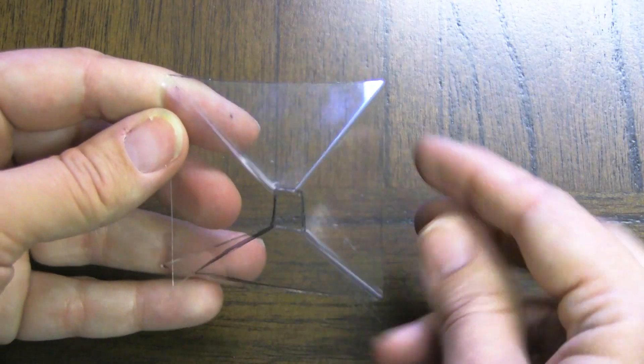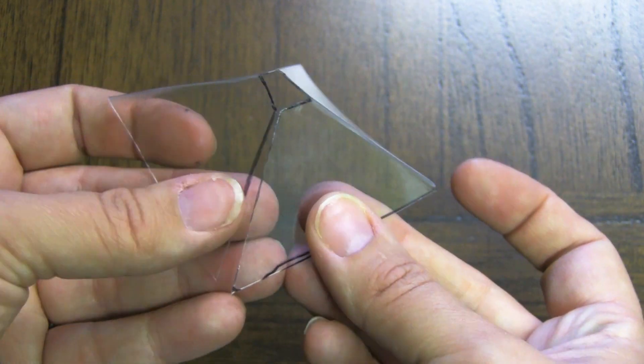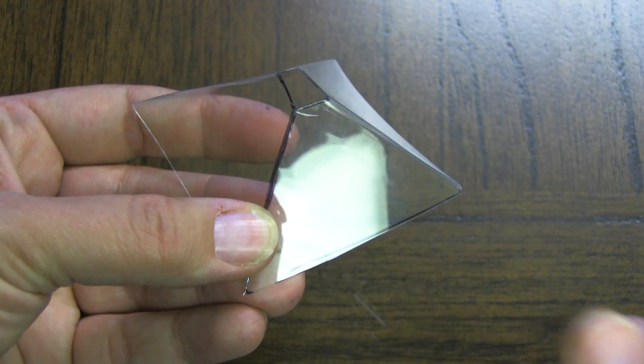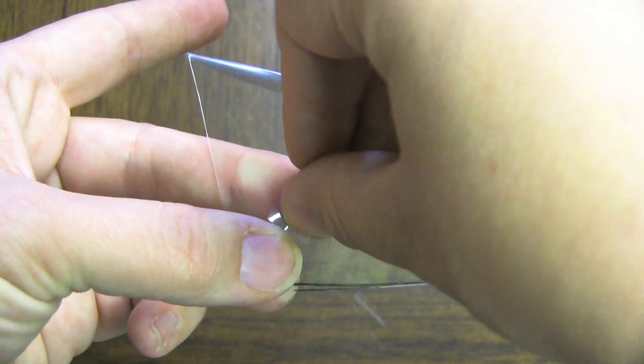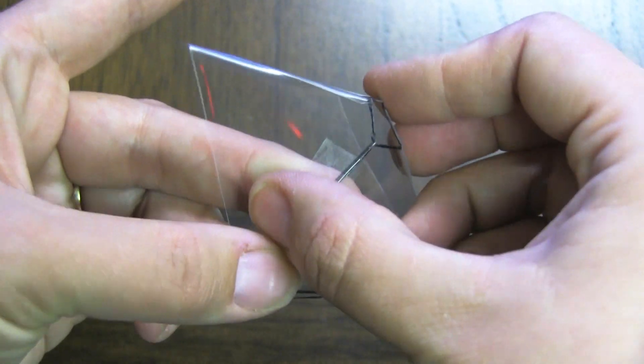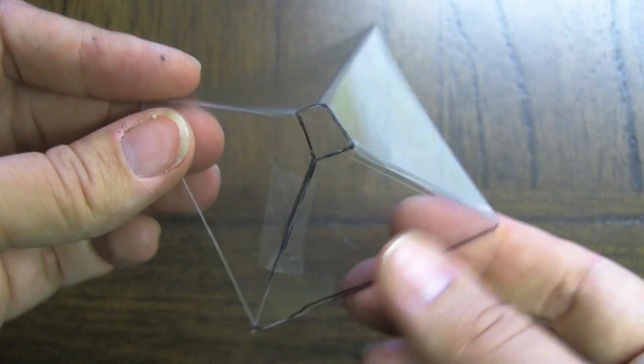Excellent! So once you have all sides folded, you'll have a pyramid shape and all you have to do is put tape on one side right here. So using a small piece of clear tape, just tape up the seam just like that. Now you have yourself a hologram projector.